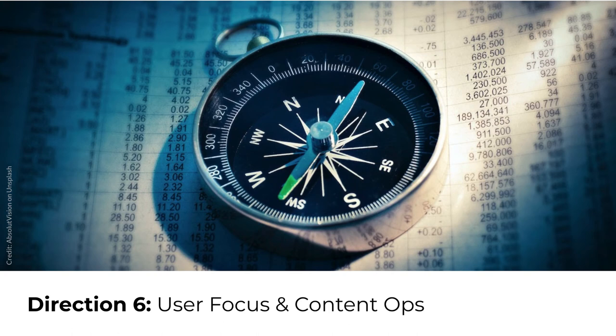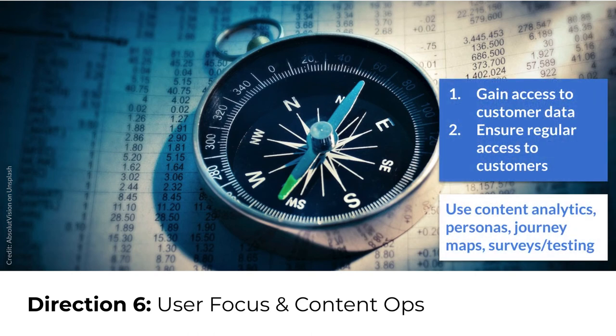The sixth direction for content strategy, based on maturity level, is user or customer focus — in an older version of the IPMM this was called quality management. This characteristic focuses on the level at which an organization continuously navigates by focusing on users or customers and making decisions based on data. For organizations with lower maturity levels, strategy should focus first on providing content professionals with access to existing data — this could mean tactics involving content analytics, existing personas, and journey maps. For organizations with higher maturity levels, content strategy should ensure regular access to customers for testing content performance.